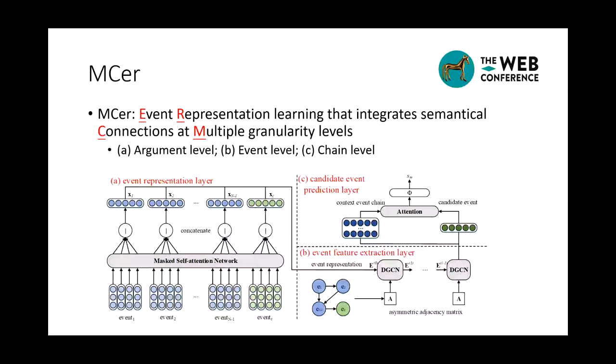To this end, we propose a novel framework, MCER, that performs event representation learning by integrating semantical connections at multiple granularity levels. We first device an event representation layer to enrich contextual features of arguments, and then develop a directed graph convolutional network to capture complex evolutionary relationships of events. At last, we adopt an attention mechanism to compute the relatedness scores between context event chains and candidate events. By unifying threefold connections in a framework, our approach can learn more accurate argument event chain representations and thus facilitate the prediction performance.